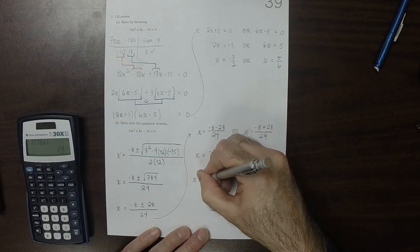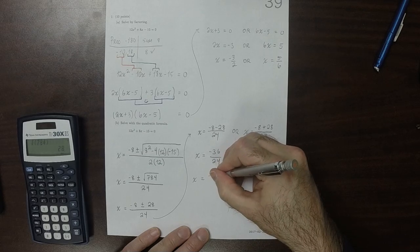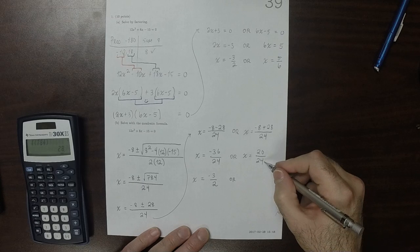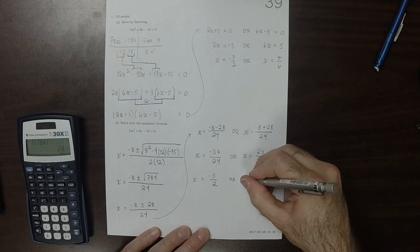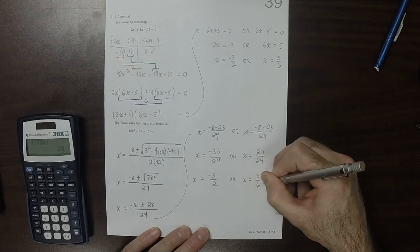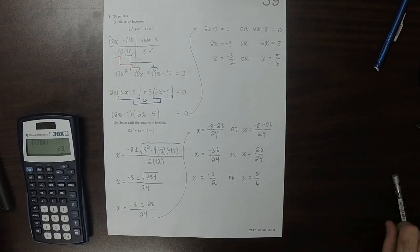And then canceling these, well, that's 3 12s and 2 12s, so negative 3 over 2. And this is 5 4s and that's 6 4s, so 5 over 6, which is, of course, the same.